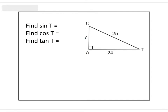Before you try this one, I want to give you a quick reminder of how to remember the trigonometric ratios. Don't forget we talked about SOHCAHTOA — a mnemonic device we used to remember how the ratios went. Remember: sine is opposite over hypotenuse, cosine is adjacent over hypotenuse, and tangent is opposite over adjacent.